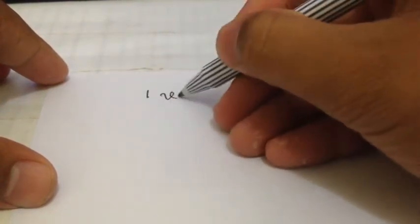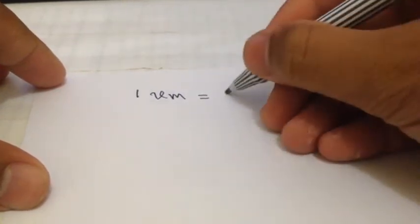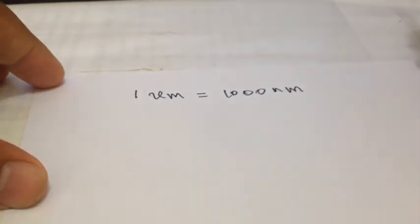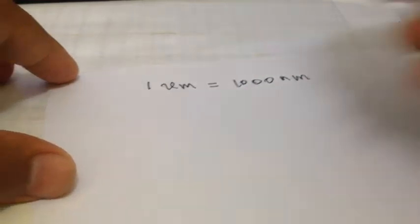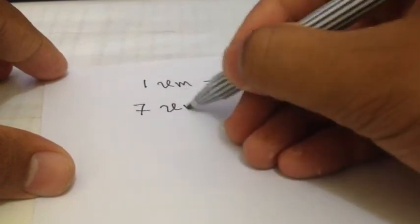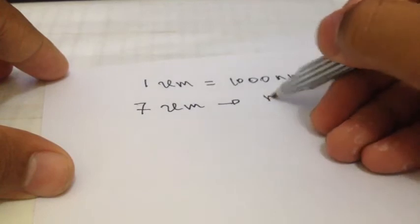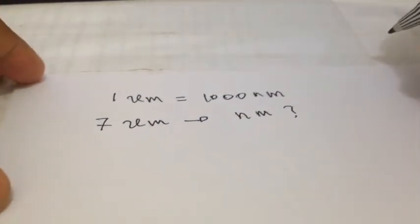One micrometer is equal to one thousand nanometers. All right, that's for sure. Now I have a question: how to convert seven micrometers into nanometers? All right, to answer this problem...